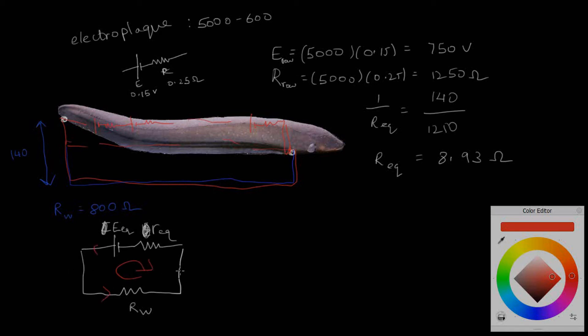I'm moving against the EMF, so that's minus E, against the current so plus IR_equivalent, and again against the current so plus IR_water equals zero. E_equivalent is 750 volts, so plugging everything in: I equals 750 divided by 8.93 plus 800. This works out to be 0.93 amps.